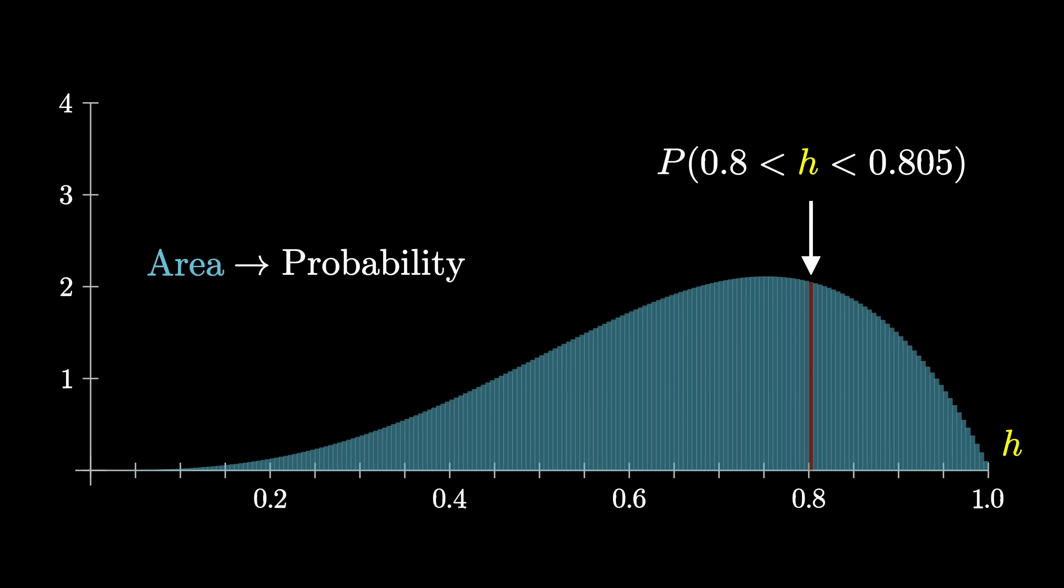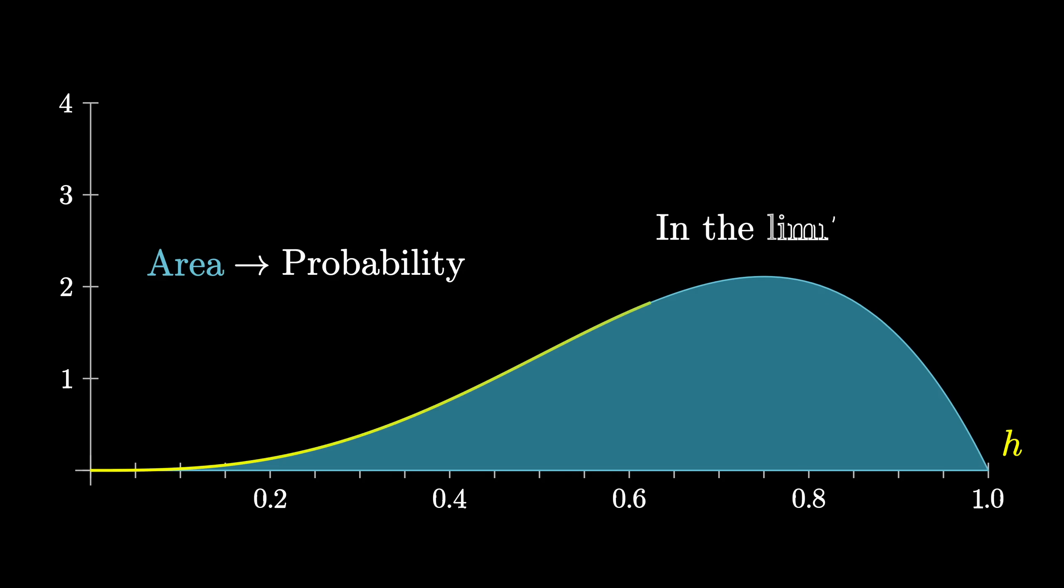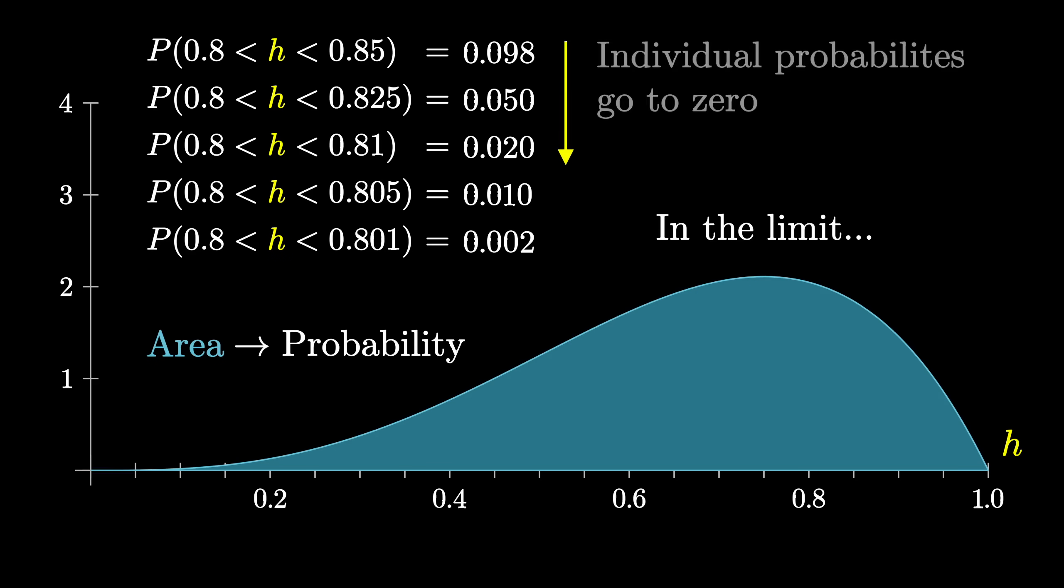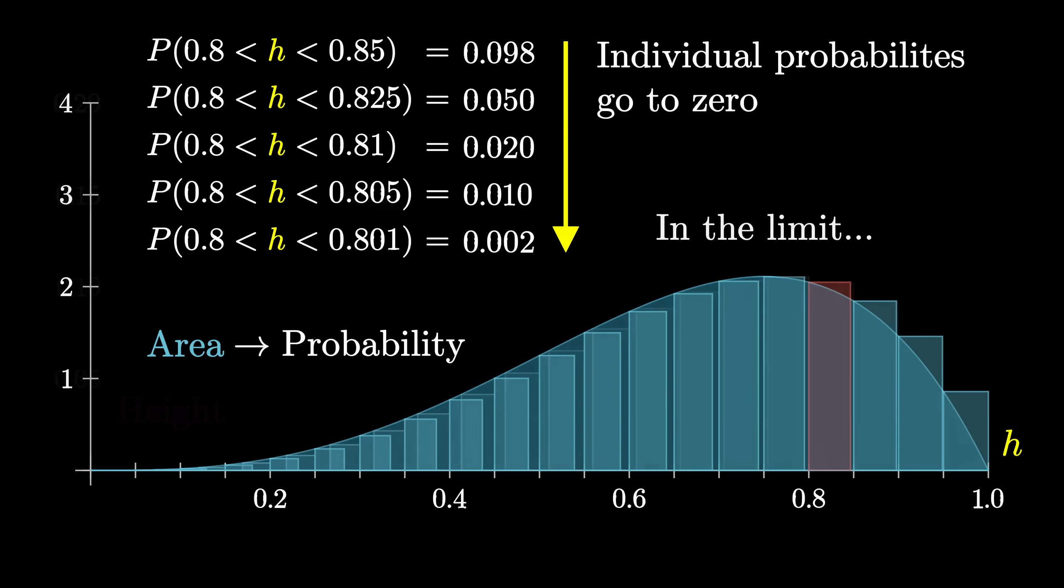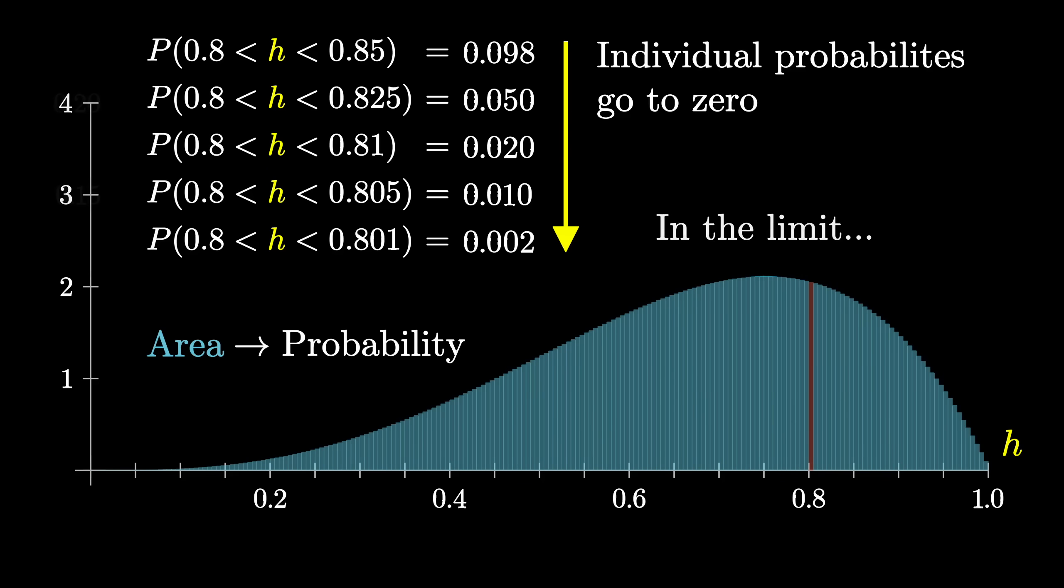While the heights are going to stay roughly the same. That's important, because it means that as you take this process to the limit, you approach some kind of smooth curve. So even though all of the individual probabilities of falling into any one particular bucket will approach 0, the overall shape of the distribution is preserved, and even refined in this limit.